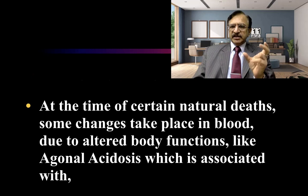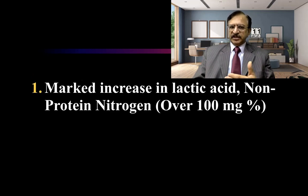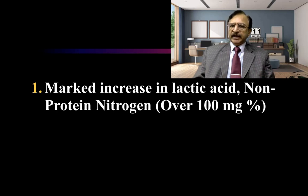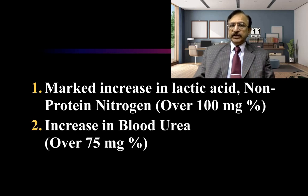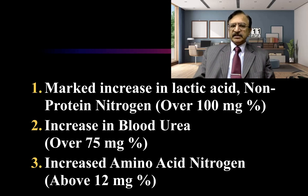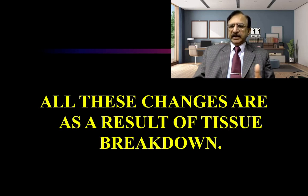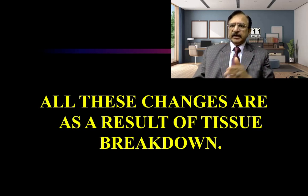At the time of certain natural deaths, some changes take place in blood due to altered body functions like agonal acidosis, which is associated with a marked increase in non-protein nitrogen — becoming over 100 milligram percent. There is also an increase in blood urea, which may be seen rising to 75 milligram percent, and an increase in amino acid nitrogen above 12 milligram percent. All these changes result from tissue breakdown in the period between somatic and molecular death.